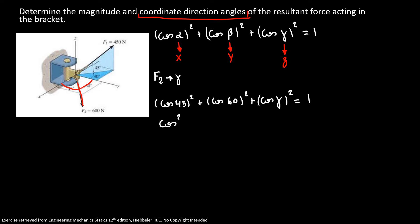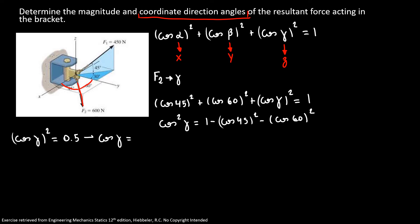So cosine²(γ) = 1 − cosine²(45°) − cosine²(60°), which gives cosine²(γ) = 0.25. So cosine(γ) can be plus or minus 0.5. Since F2 is pointing down along the z-axis, cosine(γ) = −0.5.